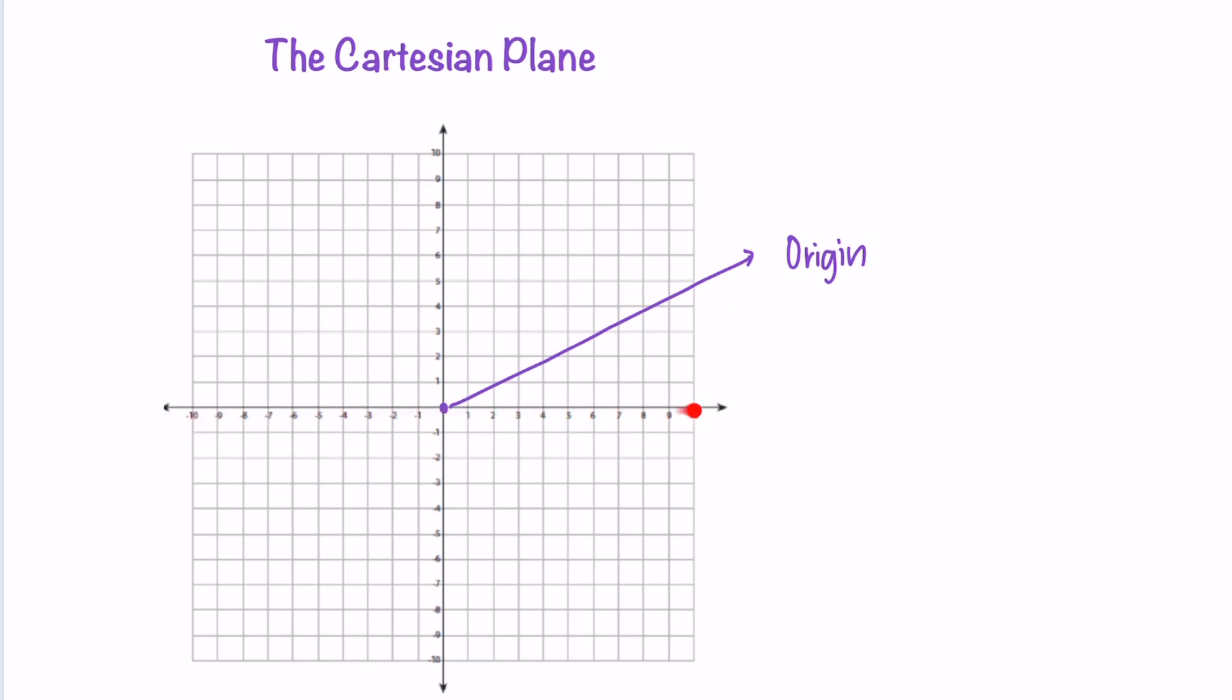The horizontal line that goes from the left to the right, we call this the x-axis. The vertical line that goes from the top to the bottom or bottom to the top is called the y-axis.